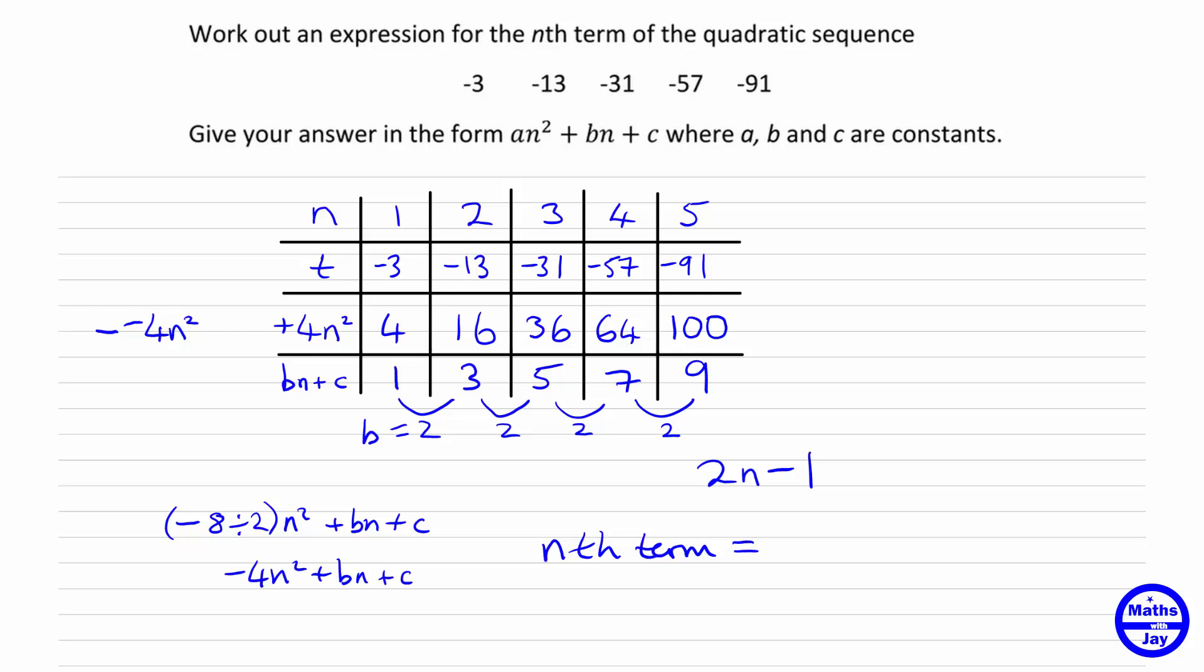So remember, we started off by finding out what the an squared was. That was minus 4n squared. And now we've just found that the other part of the sequence is 2n minus 1.